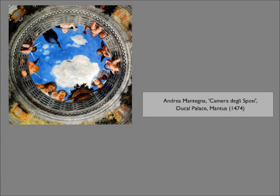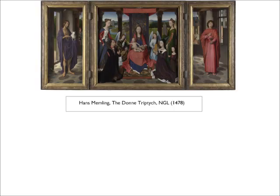Andrea Mantegna's perspectival ceiling fresco in the middle of the ceiling of the camera degli sposi, the room of the wives, in the ducal palace of the Gonzaga family in Mantua, is particularly interesting as an isolated example of a pure di sotto in su, or from down to up, perspective, whereby the perspective recedes vertically away from the viewer instead of towards the horizon, and this style of perspectival ceiling will become incredibly influential in the following two centuries.